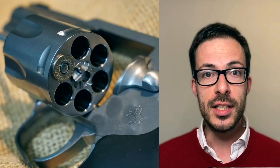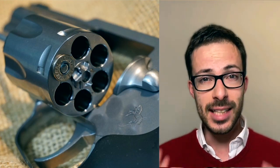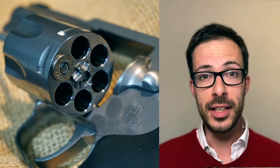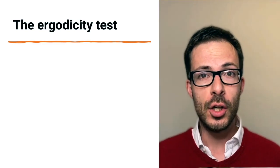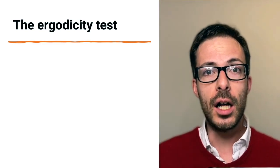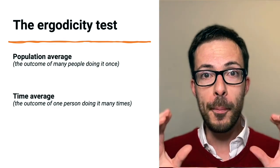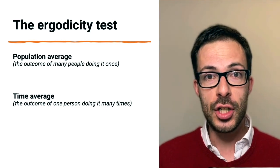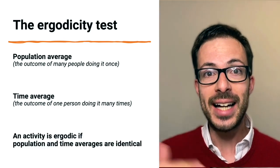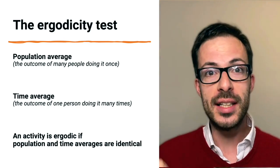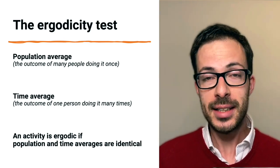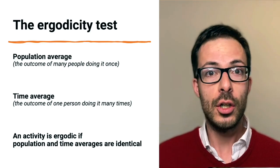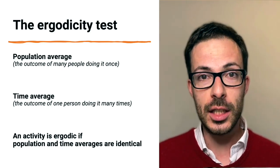To answer that, we can begin with a context that we know better in the field of Ergodicity, which is Russian Roulette. Is Russian Roulette an ergodic activity? Usually, to answer this question, we apply the so-called Ergodicity test, which is we compare two quantities, the population average and the time average, and we check whether they are identical. If they are, then we know it's an ergodic activity. And if not, we know it's a non-ergodic activity.